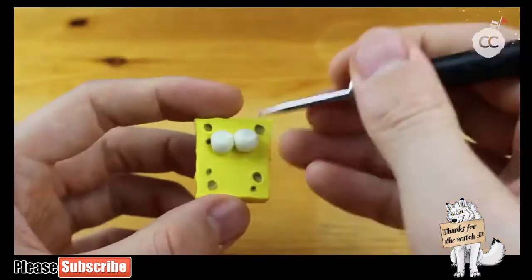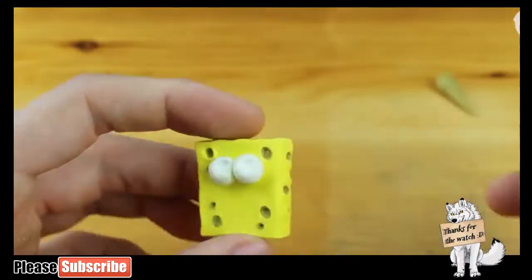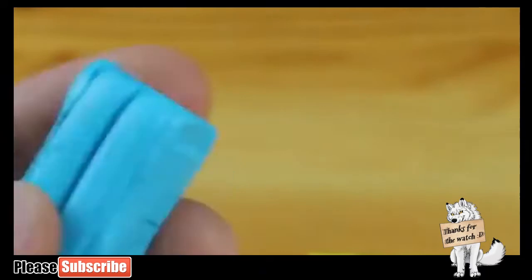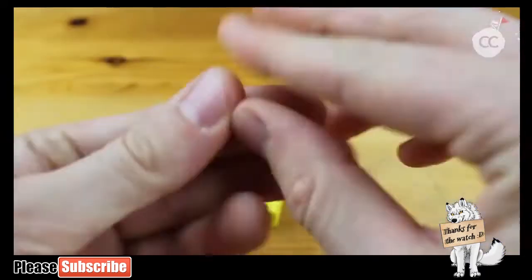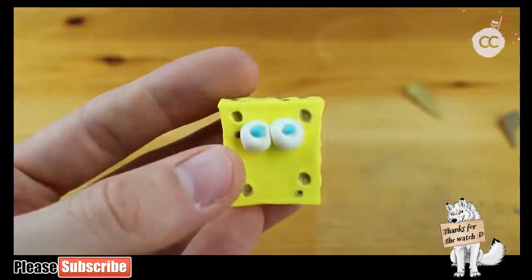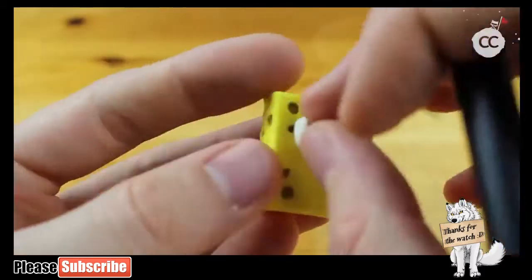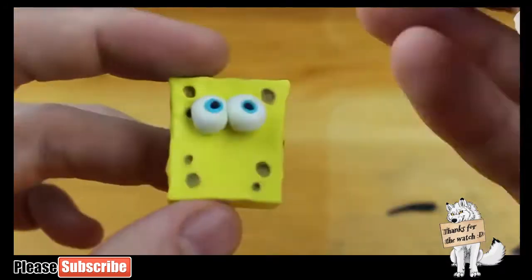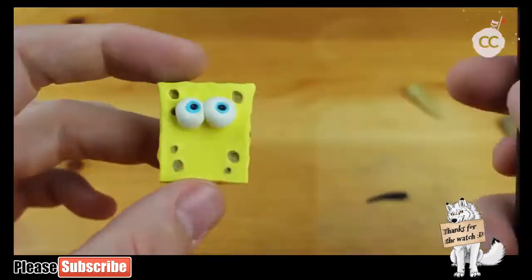Next step is creating the iris. For the iris we need some bright blue clay, just make two tiny balls, and of course black dots right in the middle.